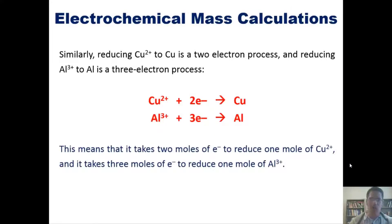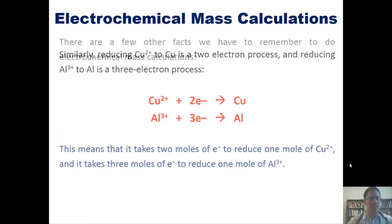This means then that it takes two moles of electrons to reduce one mole of copper 2+, and it takes three moles of electrons to reduce one mole of aluminum 3+. Make sense? Okay good.